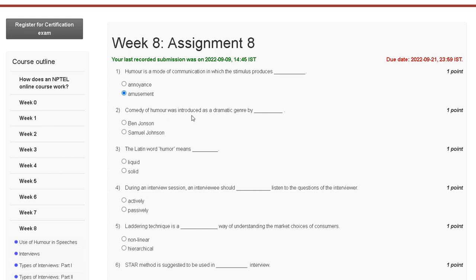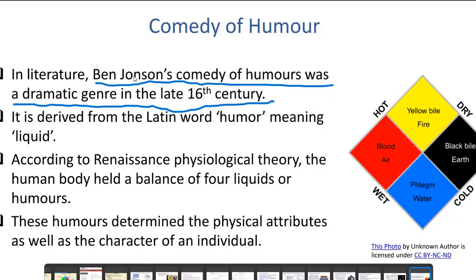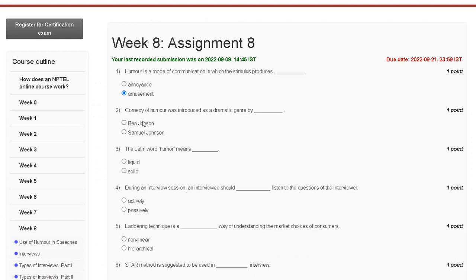Question number two: comedy of humors was introduced as a dramatic genre by whom? The explanation: Ben Johnson introduced comedy of humors as a dramatic genre in the late sixteenth century. So the correct answer for question number two is option A — Ben Johnson.